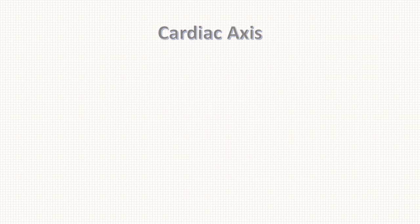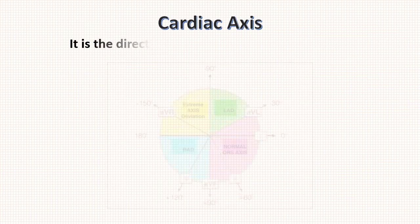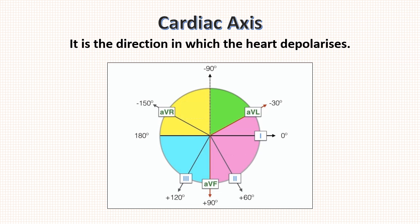First of all, what does cardiac axis mean? It is the direction in which the heart depolarizes. Normal axis of the heart is from minus 30 degrees to plus 90 degrees. This area is for normal axis, which is depicted by pink color.